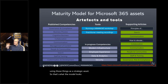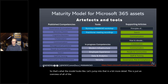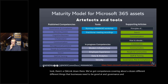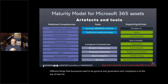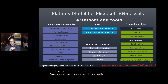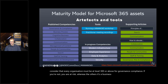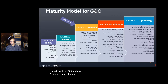This is just an overview of all of the Microsoft Maturity Model assets. We've got competencies covering about a dozen different things businesses need to be good at, and governance and compliance is at the top of that list. Compliance is the only thing in this list where we — the authors — consider that every organization must be at level 300 or above. For governance and compliance, if you're not at 300, you're at risk. For the others, it's a business choice.